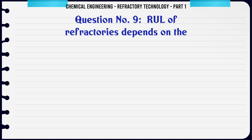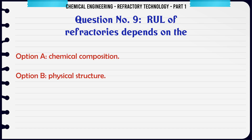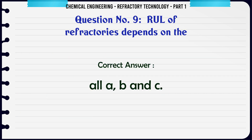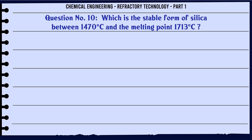RUL of refractories depends on the: A. Chemical composition, B. Physical structure, C. Presence of impurities like iron and alkali, D. All A, B and C. The correct answer is All A, B and C.